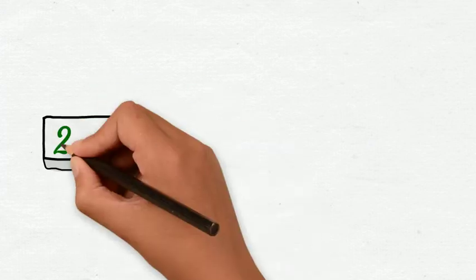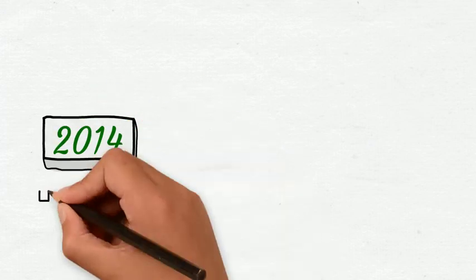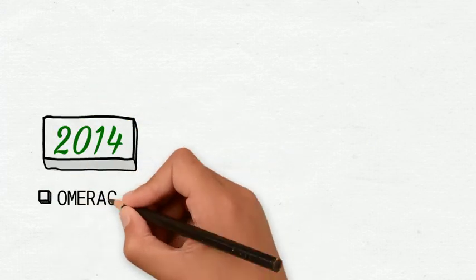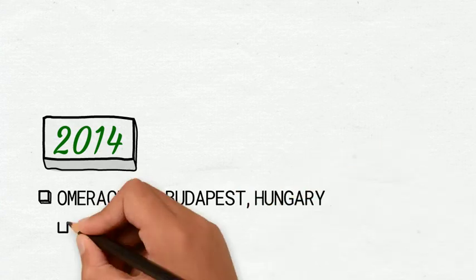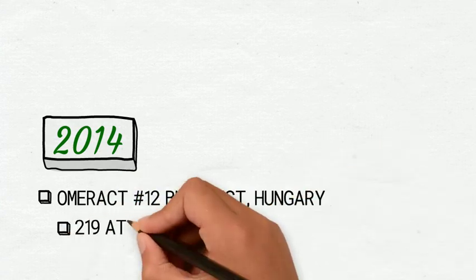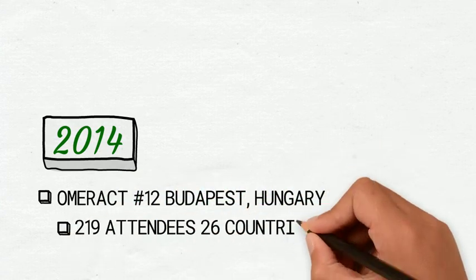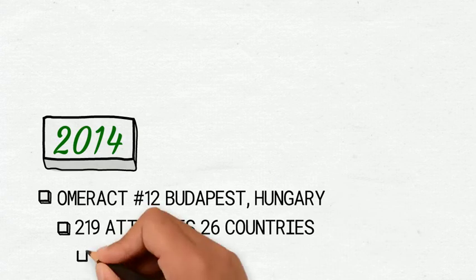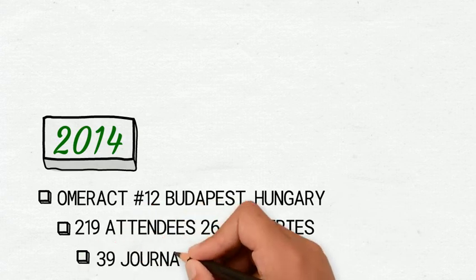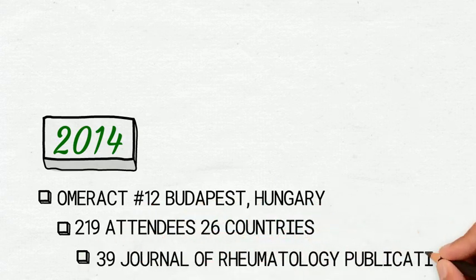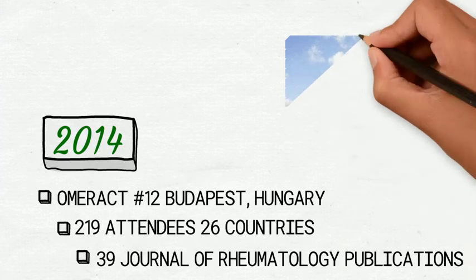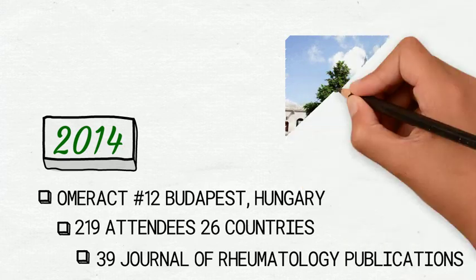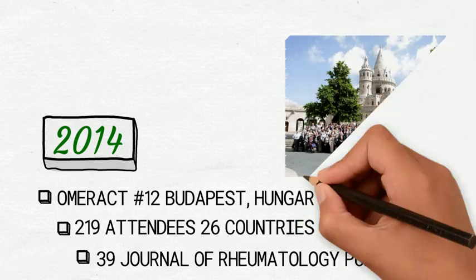OMERACT XII, held in Budapest, Hungary in 2014, displayed the effort of 22 working groups. These working groups presented a broad portfolio of relevant research in three themed areas: disease-specific areas, imaging and biomarkers, and methodology and cross-cutting themes.